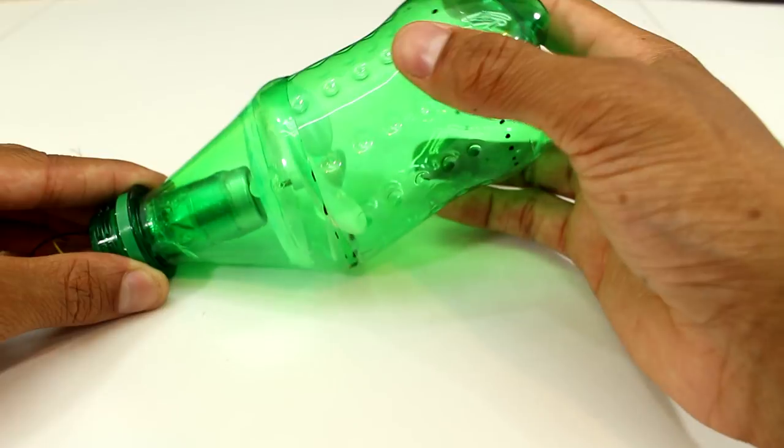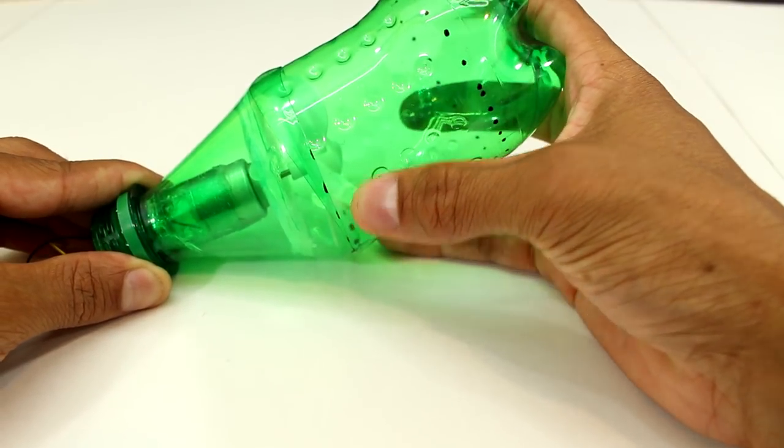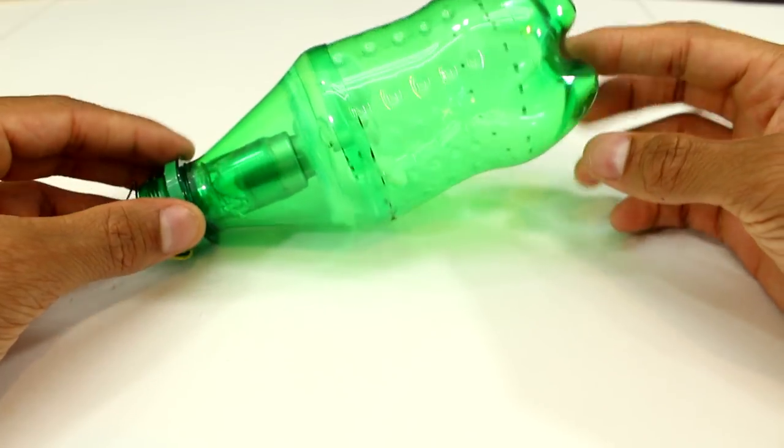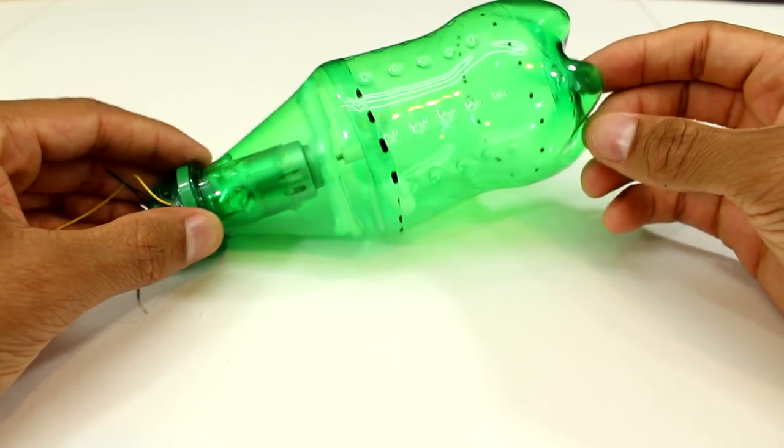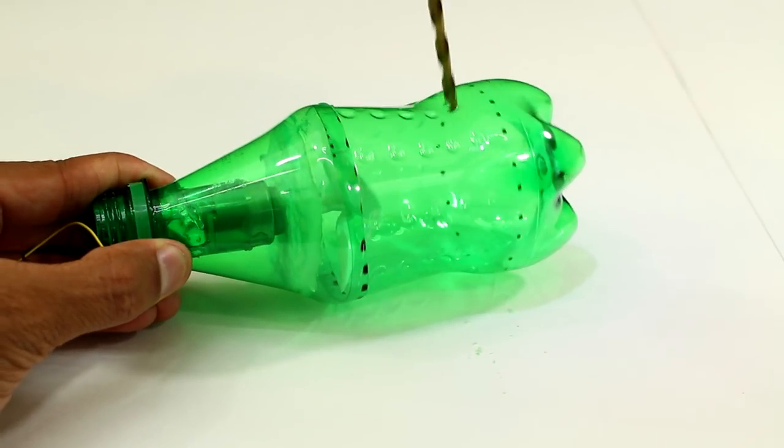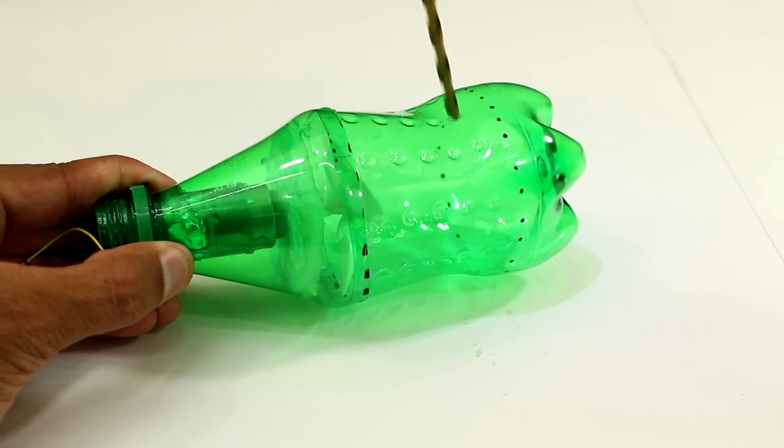Now we're going to attach the back half of the vacuum. This can be shorter or longer, it doesn't really matter. The only thing that really matters is that we drill a couple holes in it. Basically, what these holes will do is let the air escape out of the back of it, and then we also want to glue it in place after we slide it in.